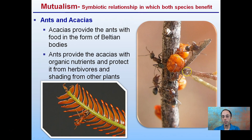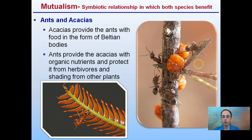Ants and archaeids — archaeids provide the ants with food in the form of beltian bodies. Ants provide these archaeids with organic nutrients and protect them from herbivores and shading from other plants.